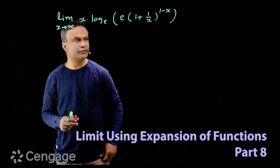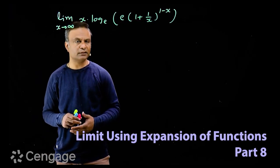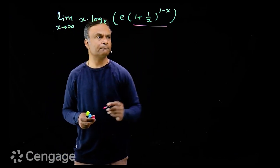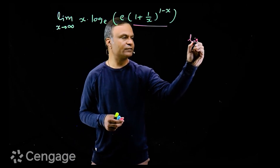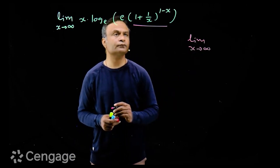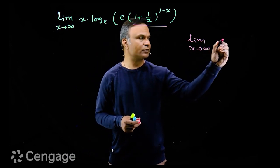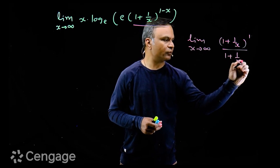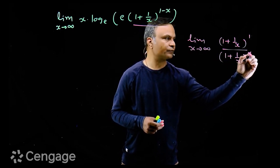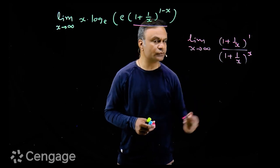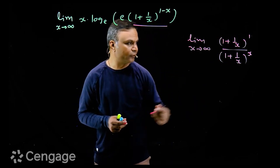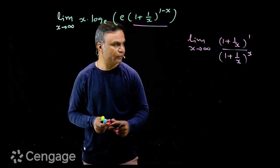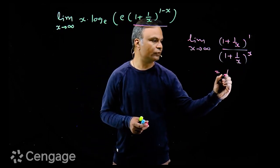Let us try this question — evaluate this limit. First of all, we will check the form of the limit. For that, we need to check this limiting value. The limit as x tends to infinity can be written as 1 plus 1 upon x, raised to the power of 1 over (1 plus 1 upon x) raised to the power x. As x tends to infinity, the numerator tends to 1, and in the denominator we have a standard limit — this is the 1 to the power infinity form, whose limiting value is e. So this becomes 1 upon e.